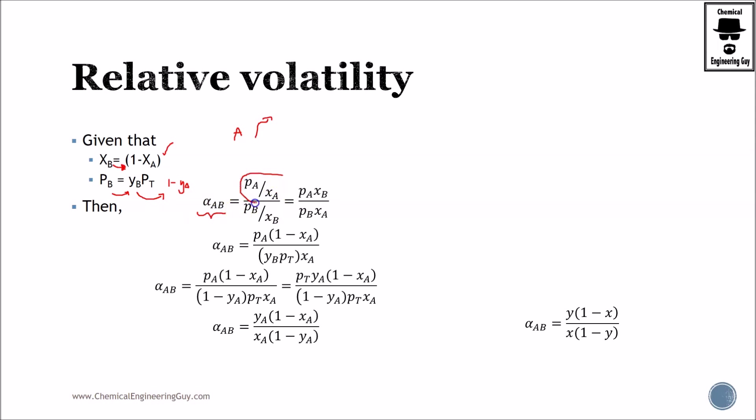We got the ratio: volatility of A over volatility of B. If we perform this mathematical operation, this goes up and this goes down. Let's substitute 1 minus xA. pA remains here, pB can be substituted here, and xA remains here. Now let's go further. Remember that yB is also 1 minus yA, so it's here, this part right here, and all remains the same. Now let's continue.